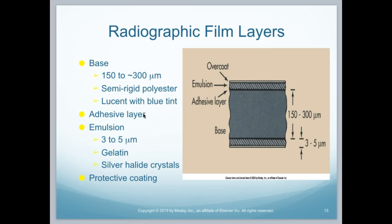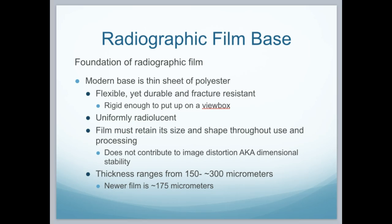We also have an adhesive layer with an emulsion. The emulsion is 3 to 5 micrometers. It's composed of gelatin which has the silver halide crystals in it, and then we have a protective coating over the top. The foundation of the radiographic film base is a thin sheet of polyester — very durable and resistant to fractures, rigid enough to be put up on a view box hundreds of times. The radiolucency is very uniform. The film retains its size and shape throughout processing, and does not contribute to image distortion or dimensional instability. Typical film ranges from 150 to 300 micrometers, but newer film is about 175 micrometers.